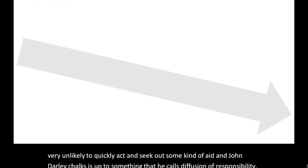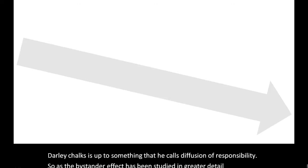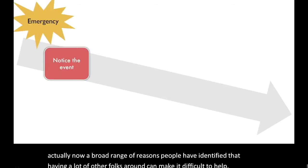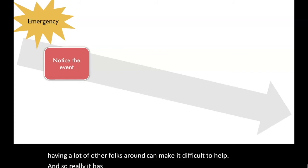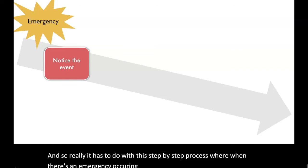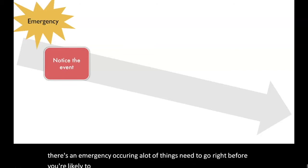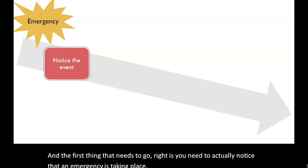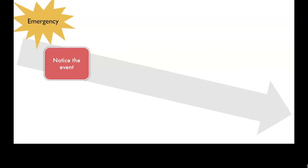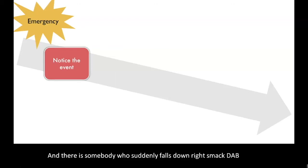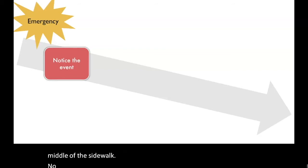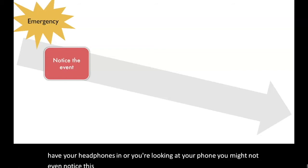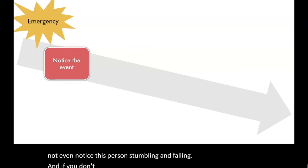As the bystander effect has been studied in greater detail, there's now a broad range of reasons why having a lot of other people around can make it difficult to help. It really has to do with a step-by-step process: when there's an emergency occurring, a lot of things need to go right before you're likely to successfully help. The first thing that needs to go right is you need to actually notice that an emergency is taking place. If you're on a busy street and there's a ton of people around, you're looking at your phone, you might not even notice someone stumbling and falling. If you don't notice there's an emergency, there's no way you can help.